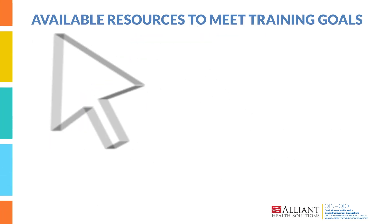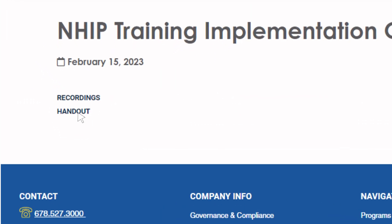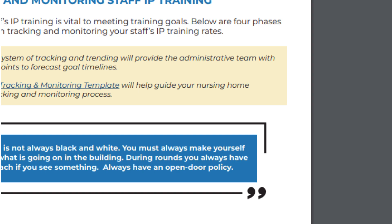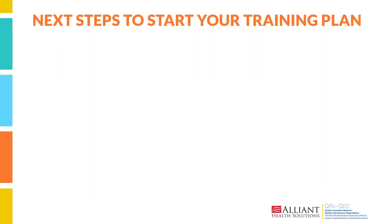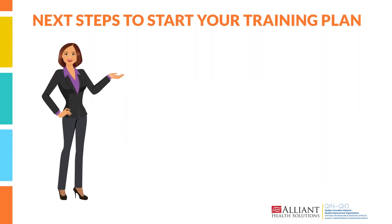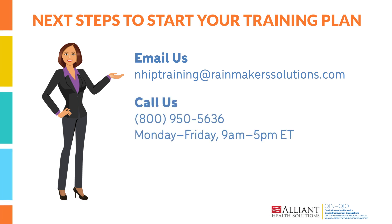If you want to access additional tracking and trending resources, visit us at Alliant Health Solutions' webpage at quality.allianthealth.org. To meet with one of our quality advisors, please email us at NHIPtraining@rainmakerssolutions.com, or call us at 800-950-5636.